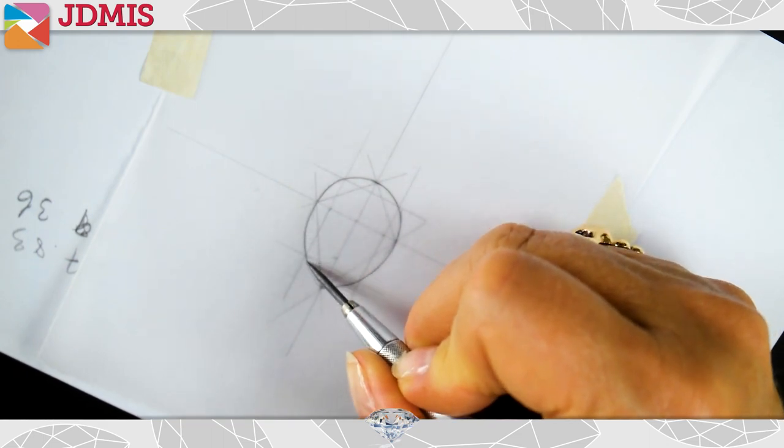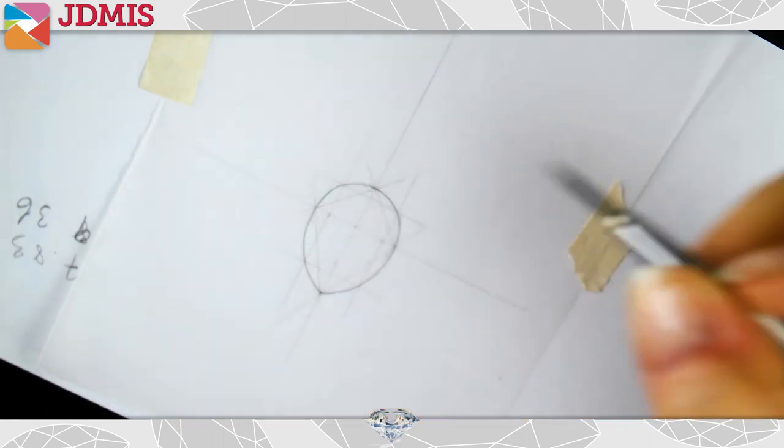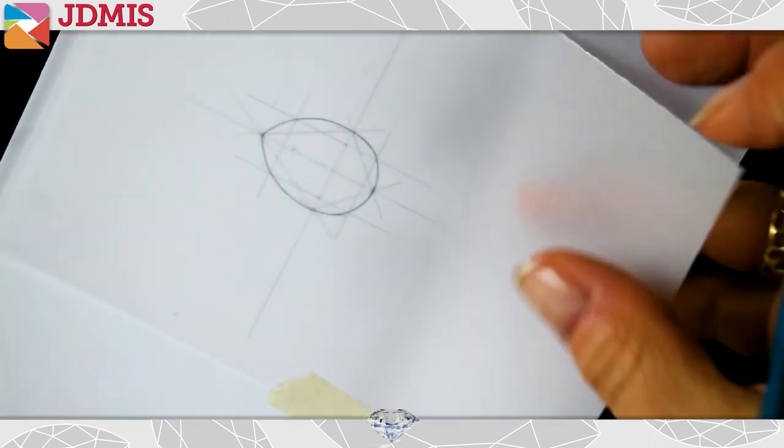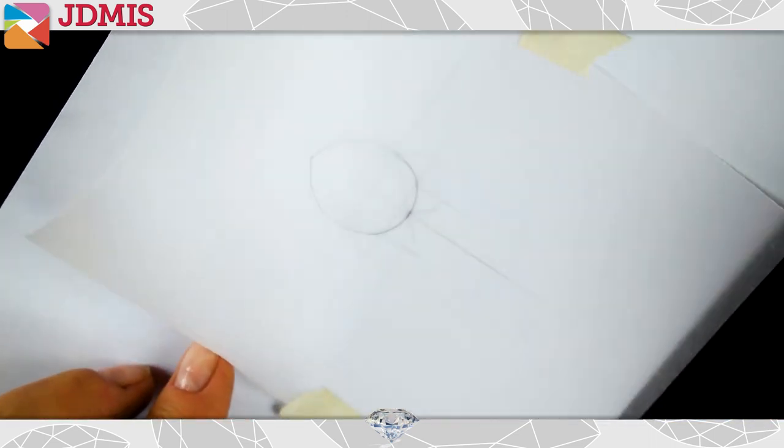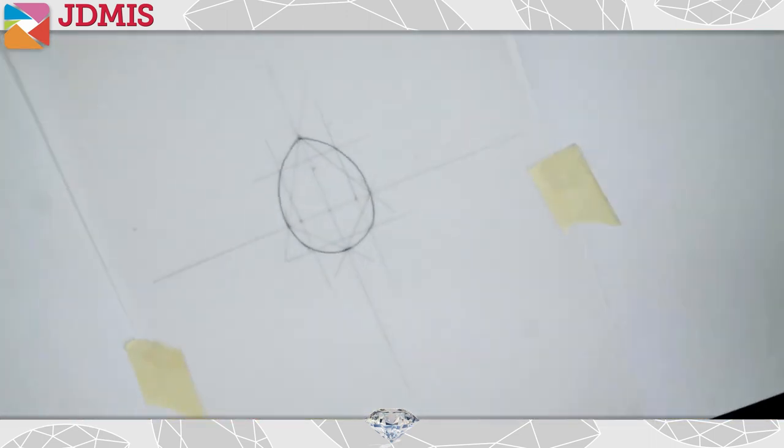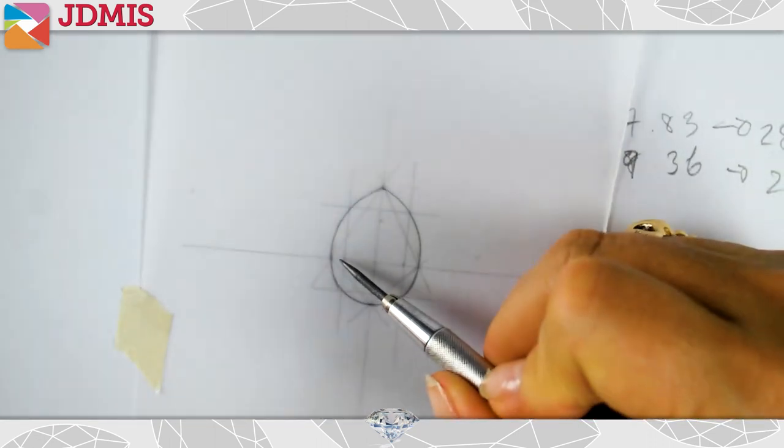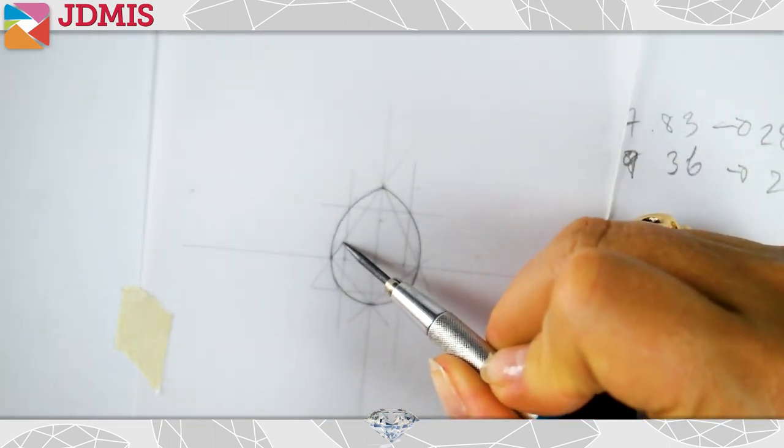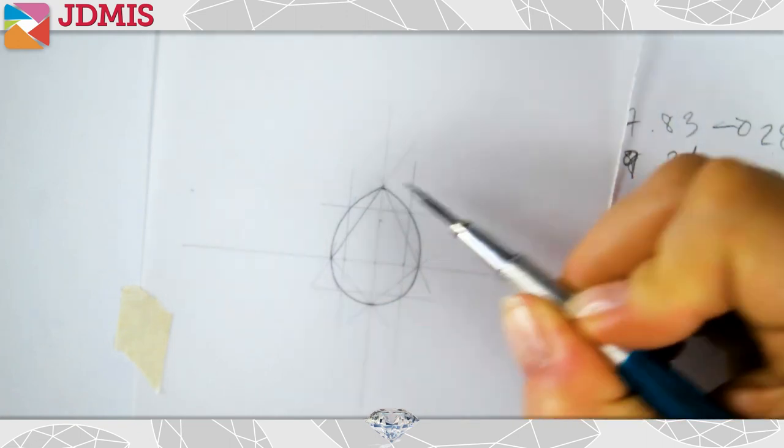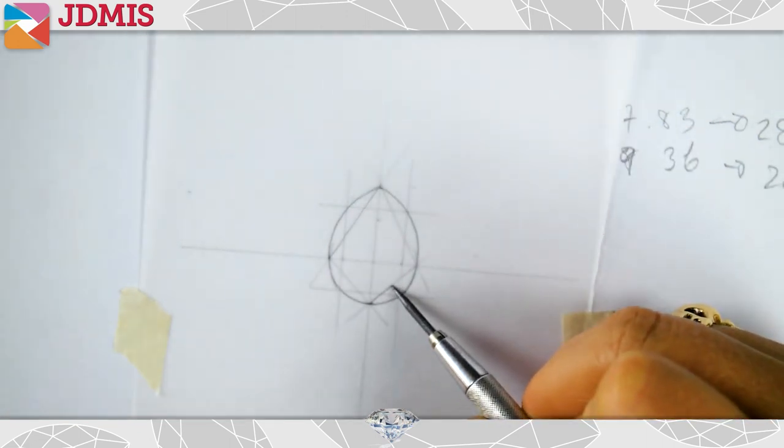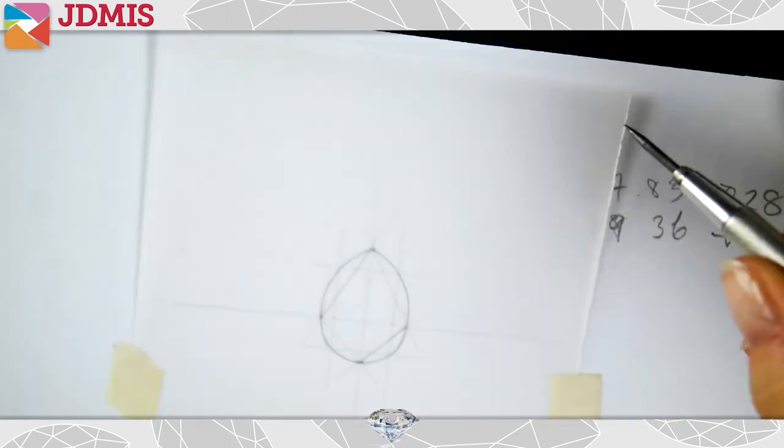The outline is pretty fast and pretty easy to do. Then, of course, we have to follow that by putting in the facets. A lot of people like to do this with templates to draw the facets because they're straight. But with a bit of practice, you should be able to do them by hand, beautifully straight and beautifully accurately.